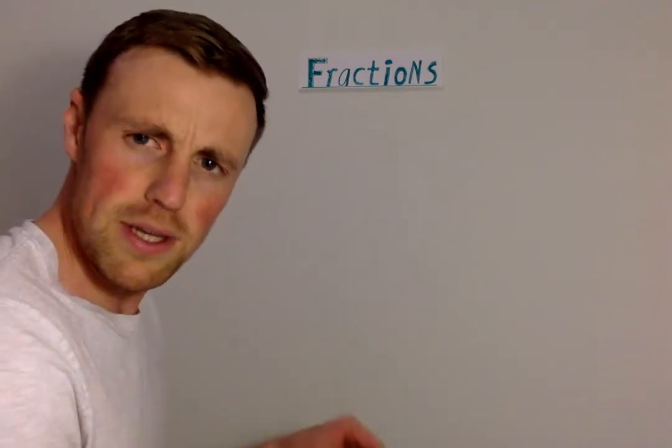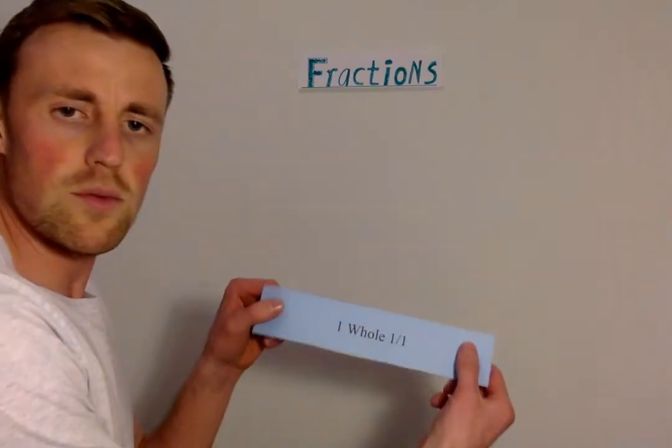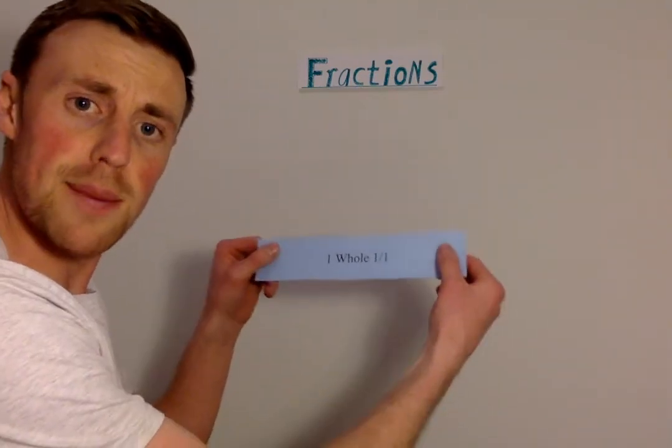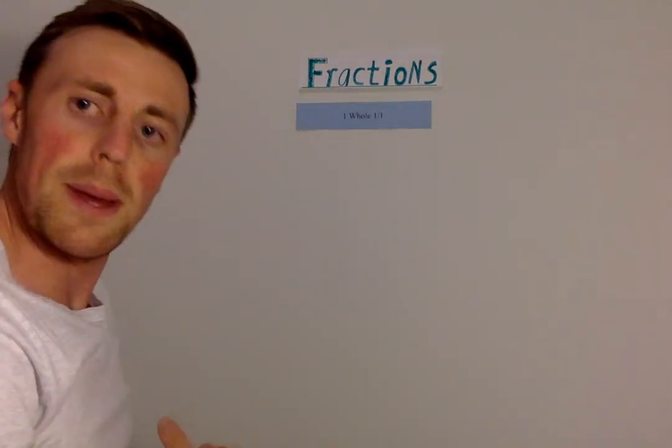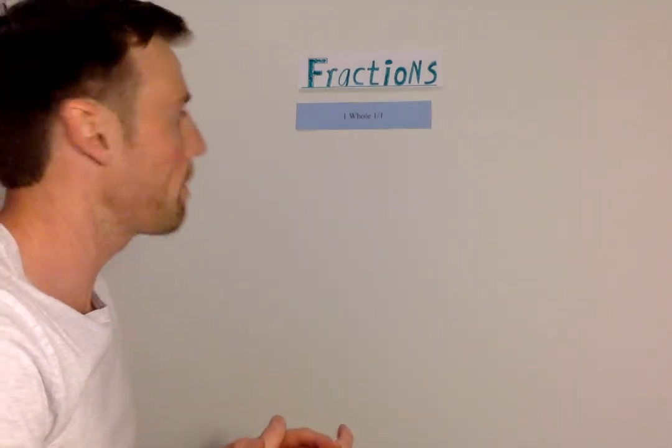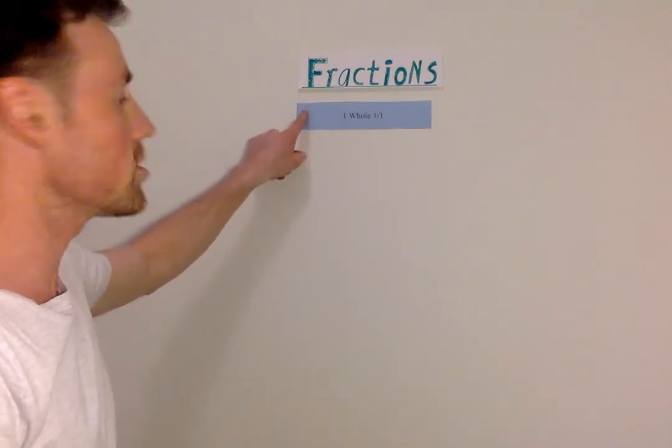Once you've cut your pieces out, here's what you do next. Start with the whole. We're going to put this up the top. Now, I'll put this on my wall. But you can just do this on your floor. So I'll put the whole at the top. So this is one whole.